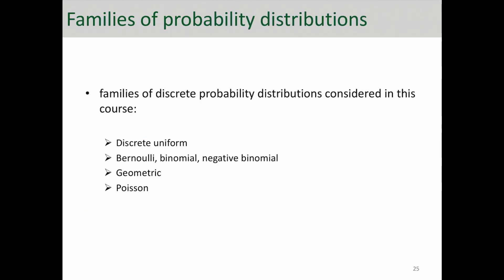The families of discrete probability distributions are listed here. We have discrete uniform, Bernoulli binomial, negative binomial, geometric, and Poisson. We'll talk about most of these random variables during this course.